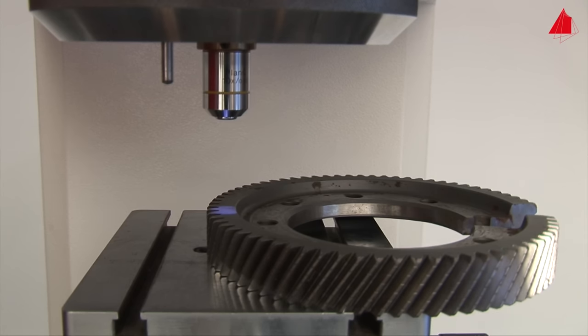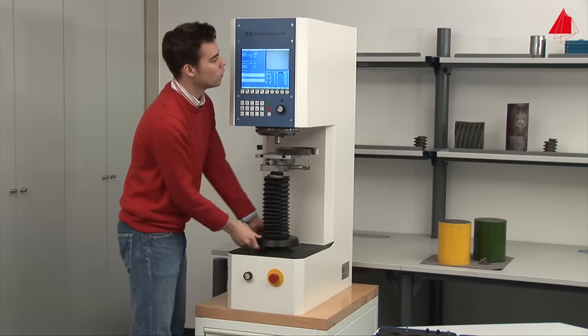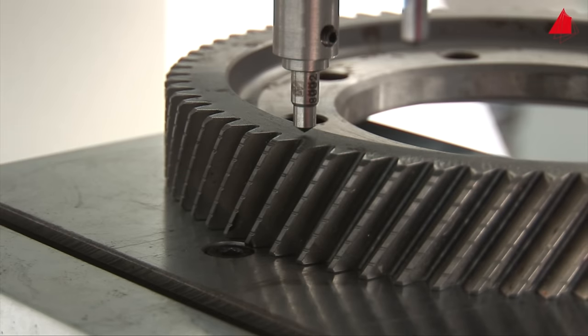After rotating the microscope lens to its vertical position, he can adjust his test piece. As soon as a focused image can be seen on the screen, the surface of the test piece is at the correct height. The test can start. In modern testing machines, the Rockwell hardness test is fully automated.